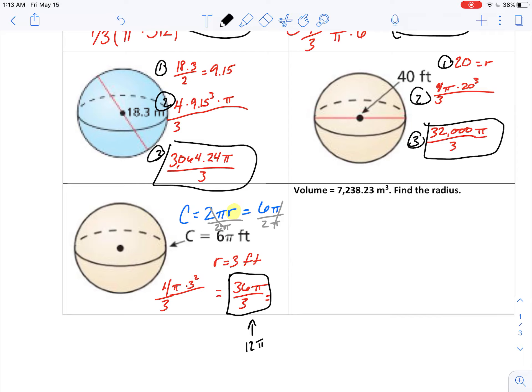And last but not least, what if I give you the volume? So this, again, volume is 4 thirds pi r cubed. It's going to be 7,238.23. And what we'll do is, again, we're solving for r cubed. So the first thing we can do is we can just divide off 4 thirds and a pi.